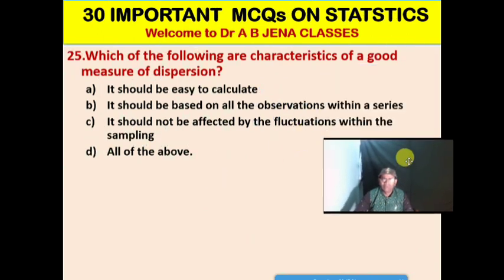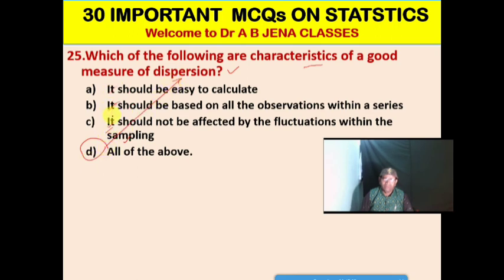Next MCQ: Which of the following are the characteristics of a good measure of dispersion? A. It should be easy to calculate. B. It should be based on all observations within a series. C. It should not be affected by fluctuations within the sampling. D. All the above. D is the right option. A, B, and C are all characteristics of a good measure of dispersion.